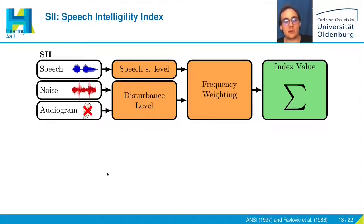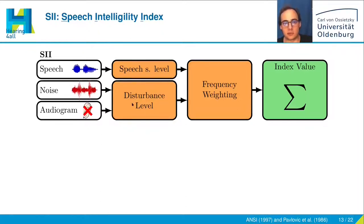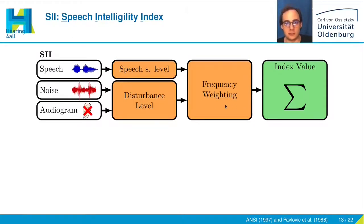The SII works as follows: we take the speech, noise, and audiogram, and calculate the speech spectrum level from the speech, and from noise and audiogram some kind of disturbance spectrum level. These two are weighted against each other and then summed to determine an index value, which has to be mapped to an SRT.